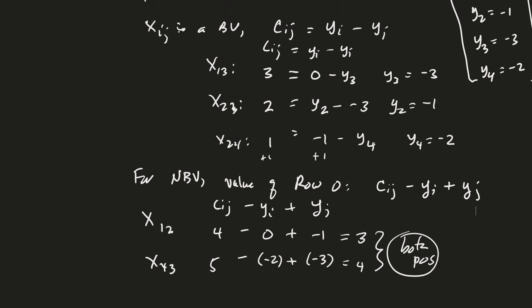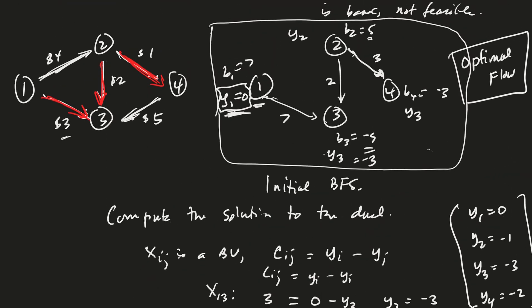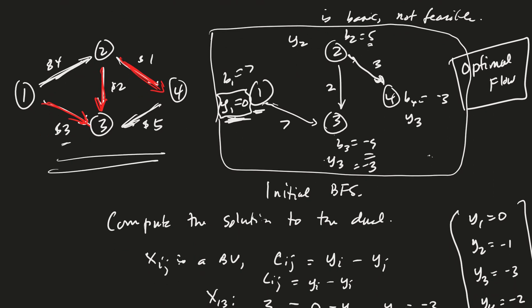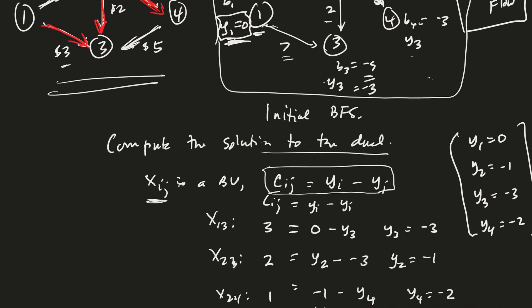So let's review what we did here. So once we had our initial BFS, we wrote down the flow values. And then what did we do? Actually, to compute the values of the dual, you don't really need the flow values. So each of the basic variables, we went ahead and computed the solution to the dual.